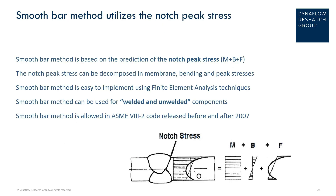The smooth bar method utilizes the notch peak stresses, and is based on the prediction of the notch peak stress, which includes the membrane, bending, and peak stress components. The smooth bar method is easy to implement using finite element analysis techniques, as it can be used for welded and unwelded components. It is allowed in ASME section 8 division 2 code releases both before and after 2007.